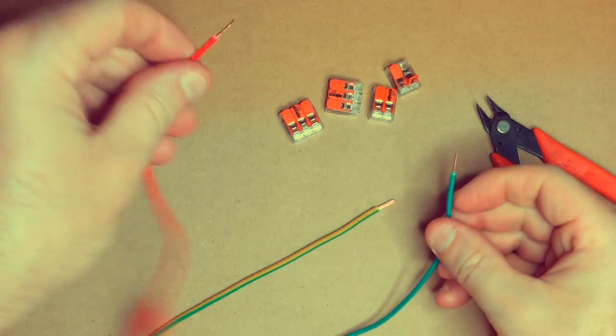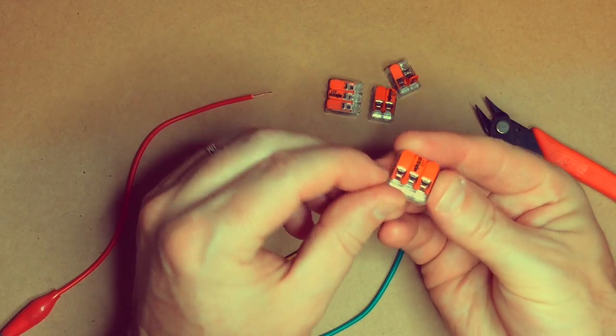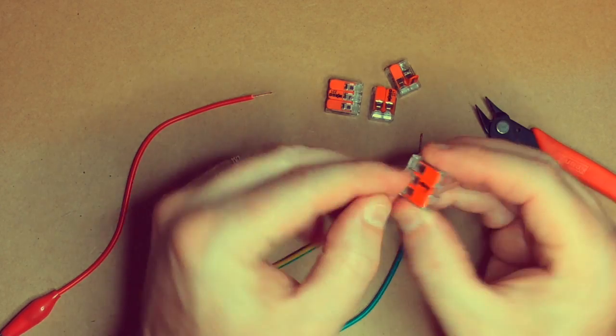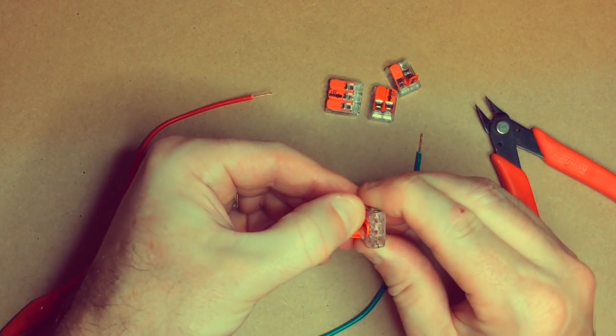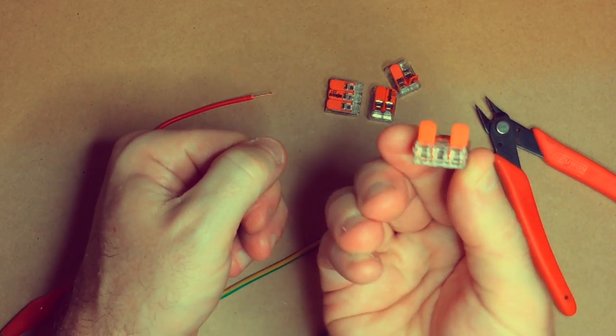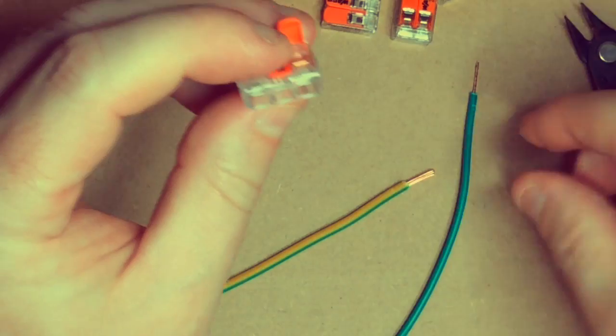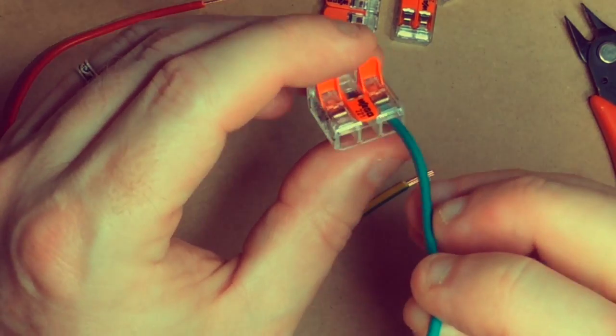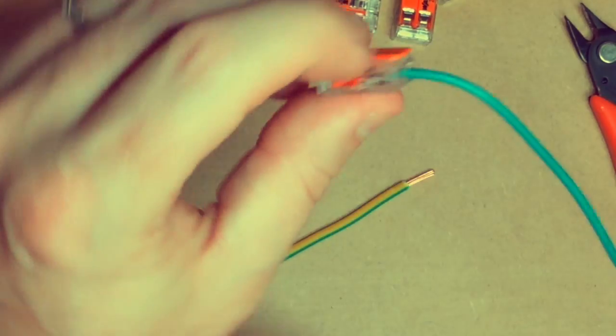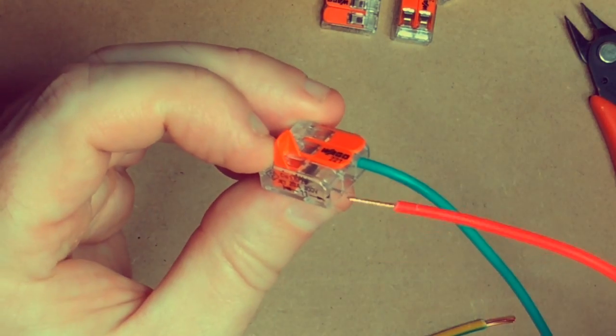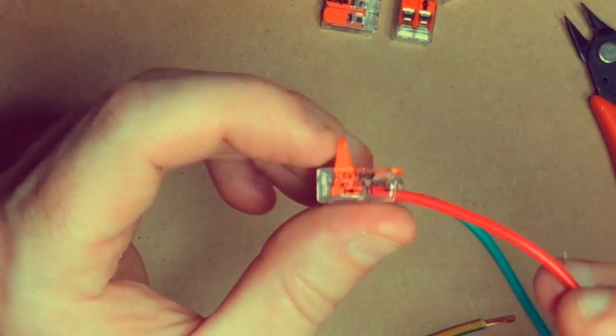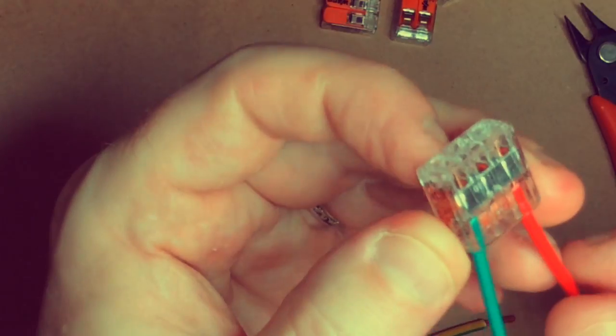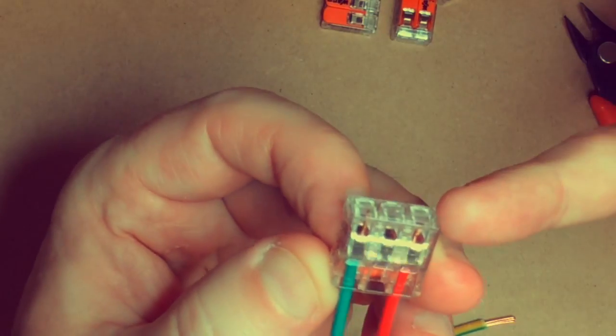Let's take one of our three-pole units here. Let's just open up these two outer ones. You can see quite simple to open up. Then let's take our green, put our green on the right, put our red wire into the terminal block.